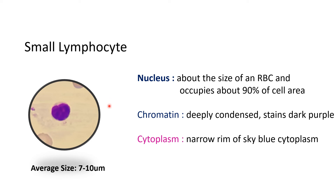The small lymphocyte has an average size of 7 to 10 micrometers, with the nucleus occupying about 90% of the cell area. The chromatin is deeply condensed, staining dark purple, with only a thin rim of sky-blue cytoplasm visible. RBCs are classified as microcytic, normocytic, or macrocytic by comparing their size to the nucleus of the small lymphocyte — larger is macrocytic, smaller is microcytic, and equivalent is normocytic.